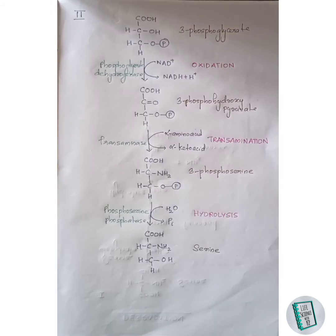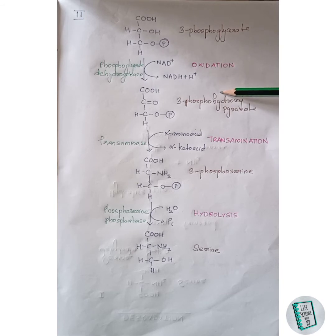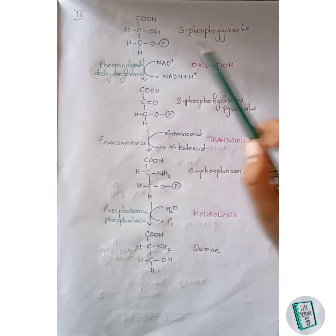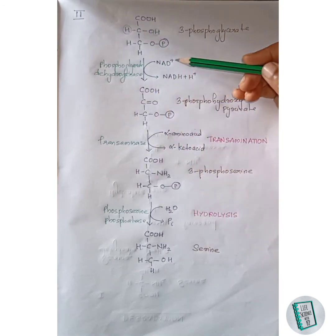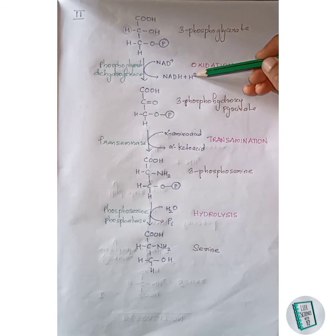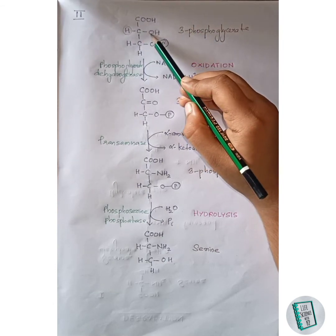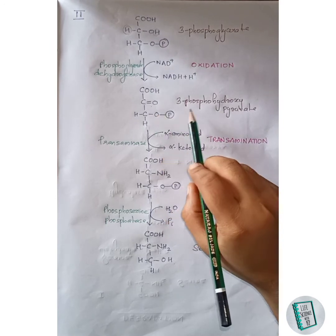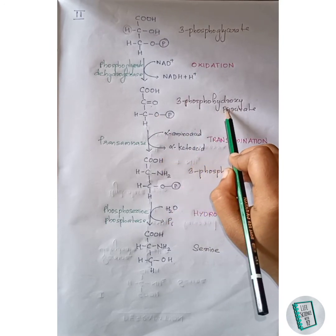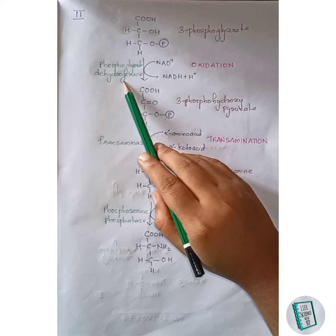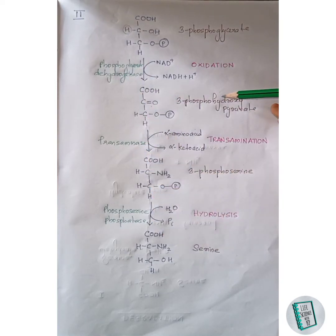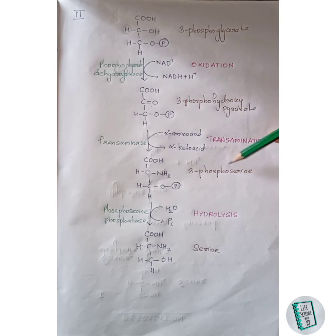Now let us move on to the second pathway. Here the starting material is 3-phosphoglycerate. In the first step, 3-phosphoglycerate undergoes oxidation to form 3-phosphohydroxypyruvate. In this step, NAD+ acts as a cofactor — two hydrogen atoms leave with NAD+ as NADH2, and this carbon forms a double bond with the remaining oxygen, forming 3-phosphohydroxypyruvate. This occurs in the presence of phosphoglycerate dehydrogenase.